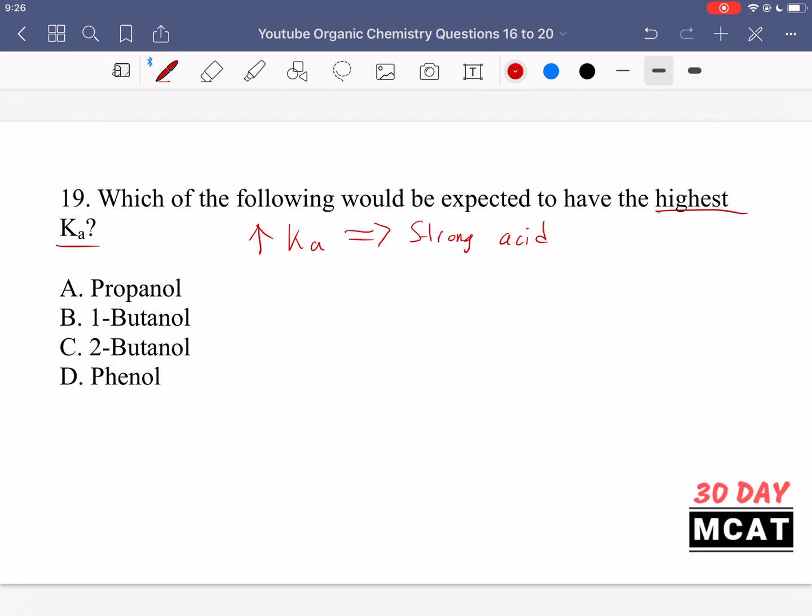But a high Ka means that I'm talking about the acid dissociation constant. So I'm talking about to what extent does this acid dissociate and lose its proton. And if the Ka is high, that means that we have a lot of products, which means we have a lot of protons. And so this acid does tend to dissociate a lot. So which one of these is the strongest acid?